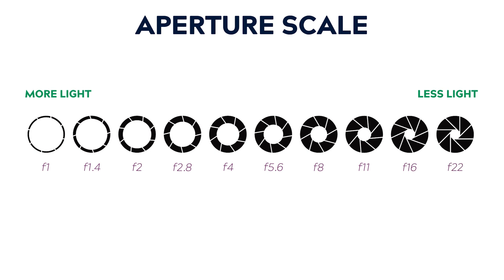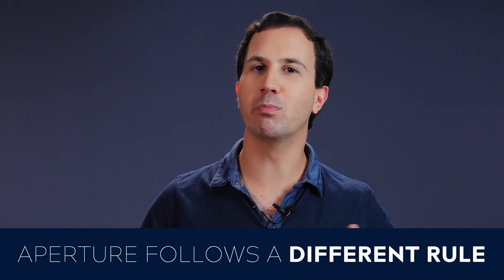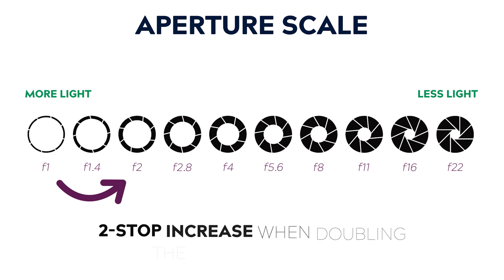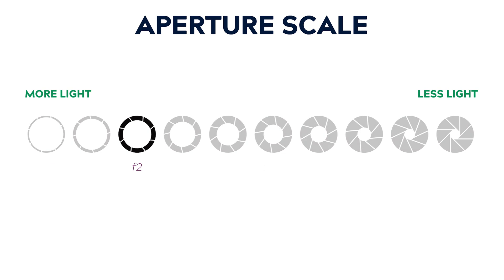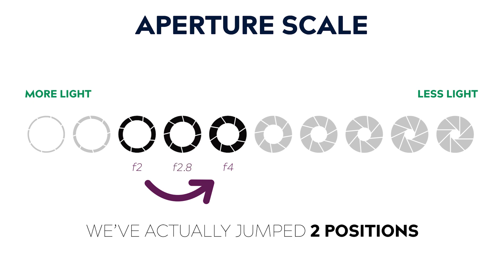Let's have a look at the aperture scale. On the scale we have the following values: f1, 1.4, 2, 2.8, 4, 5.6, 8, 11, 16 and 22. Aperture is a bit of an outlier in that it's the only exposure control where doubling or halving the numerical value doesn't equal a one stop change — with aperture, it equals a two stop change. For example, if we start at f2 and double its numerical value, that gives us f4. But on the scale we've actually jumped two positions — gone from f2 past f2.8 to f4, equaling a two stop jump. This scale is one you definitely want to learn by heart because it doesn't make sense with any kind of simple math.